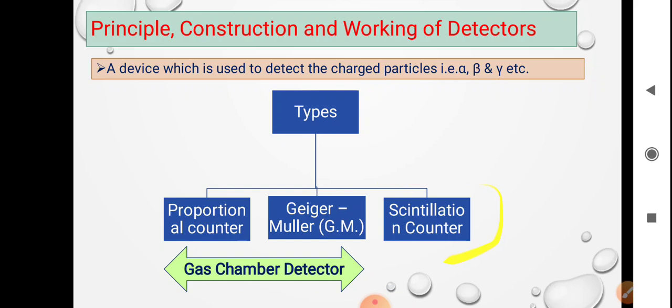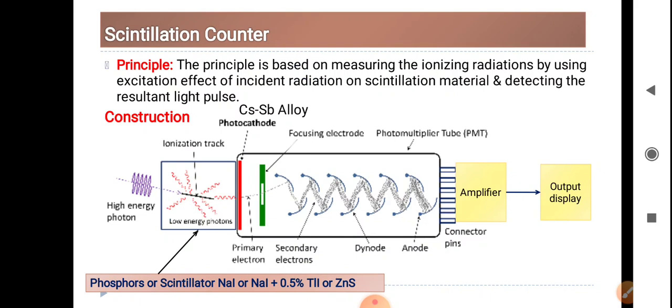Coming to the scintillation counter, what is the principle of this? The principle is based on measuring the ionizing radiations by using excitation effect of incident radiation on scintillation material and detecting the resultant light pulse.